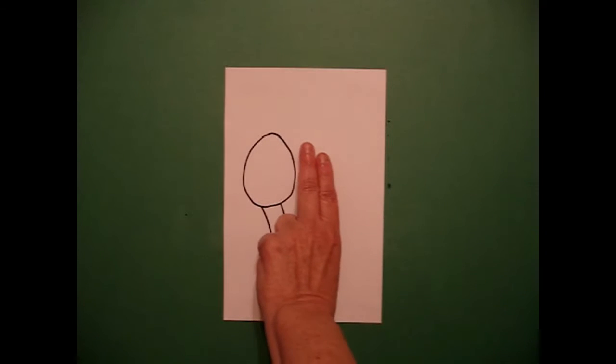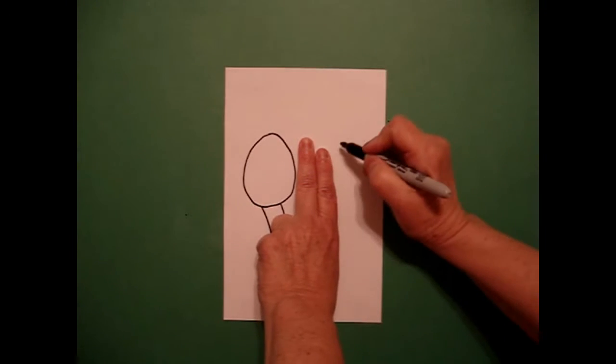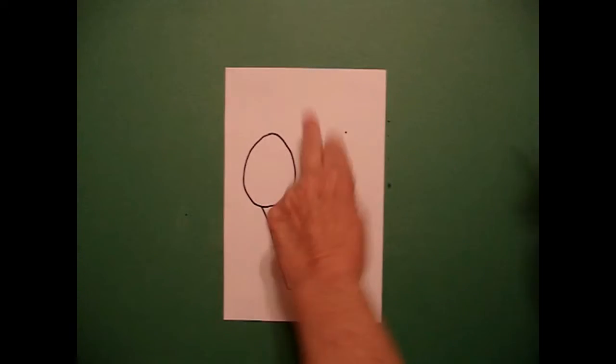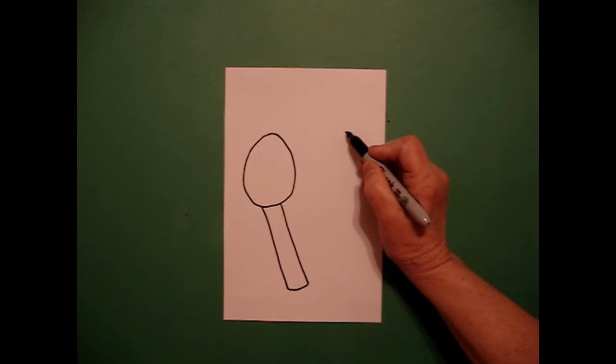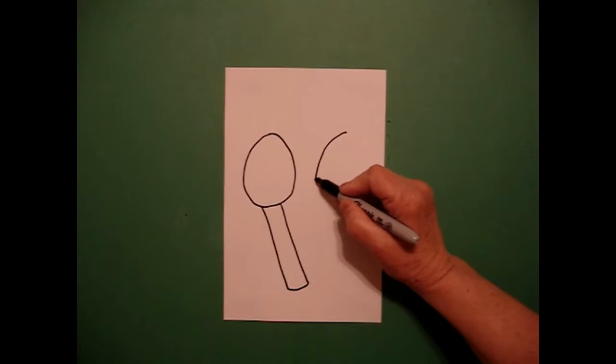I come inside and put two fingers and put another dot. And from that dot, I'm going to draw another oval.